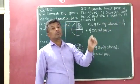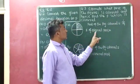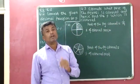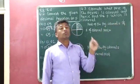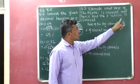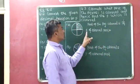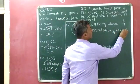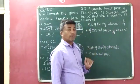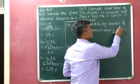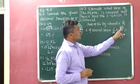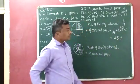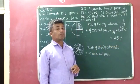Now this 1 by 4 has to be converted into percentage. The percentage of the colored part equals 1 by 4 multiplied with 100%. Since 4 and 100 can be cancelled — 4 ones are 4, and 25 fours are 100 — so 25 multiplied by 1 gives 25. Therefore, the percentage of the colored part is equal to 25%.